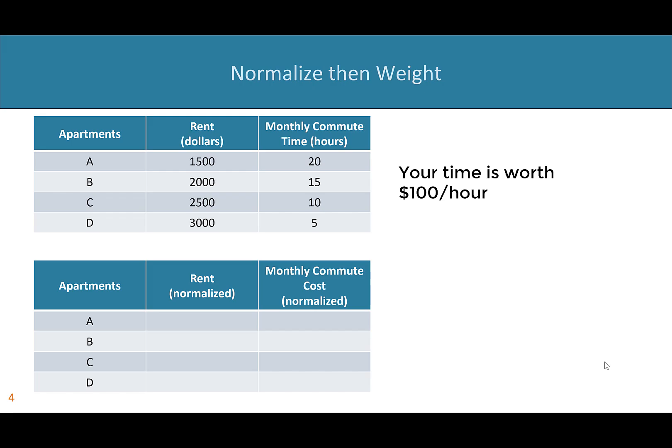Because the apartment example made so much sense in part two, we're going to use it again — but now we'll normalize the values and weight it like we did for the college rankings example. For rent, lower is better, so the best is $1,500 and the worst is $3,000. Apartment A gets a normalized value of 1 for rent, and apartment D gets 0. The other two, evenly spaced, get 0.33 and 0.67. Monthly commute time is flipped: apartment A gets 0 and apartment D gets 1 on the normalized scale, because it has the best commute time. You can see these values in the table.